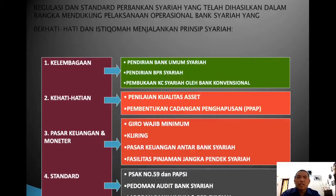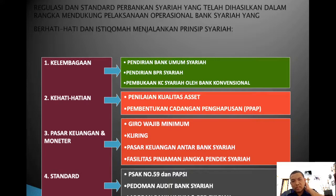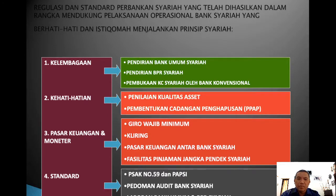Regulasi dan standar perbankan syariah mencakup empat dimensi: kelembagaan (pendirian bank umum syariah, BPR syariah, pembukaan KC syariah oleh bank konvensional); kehati-hatian (penilaian kualitas aset, pencadangan penghapusan); pasar keuangan dan moneter (giro wajib, kliring, pasar keuangan, fasilitas pinjaman jangka pendek syariah); dan standar (PSAK nomor 59, PAPSI, pedoman audit bank, laporan bank umum, dan akad syariah).